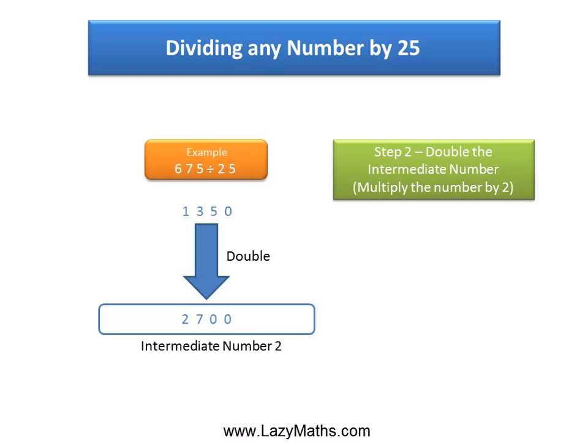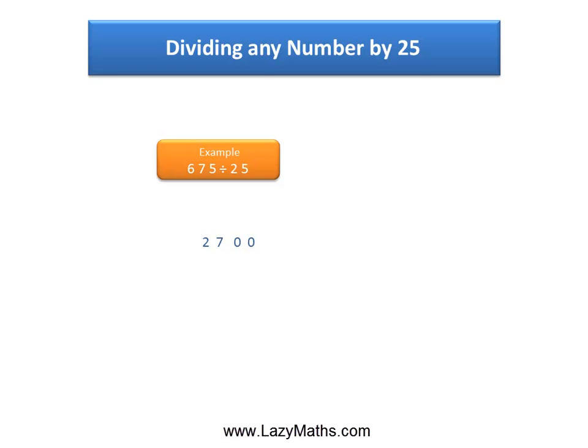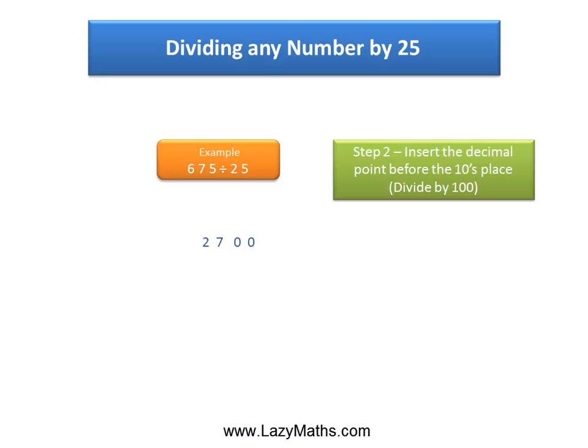We call this intermediate number 2. The last step, or the third step, is to simply take intermediate number 2, or 2700, and divide it by 100.